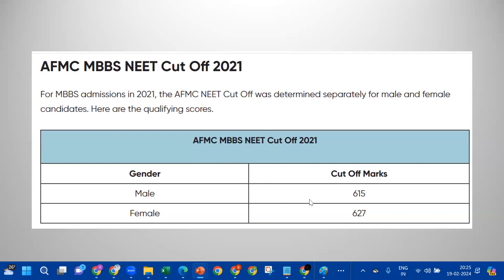For male students the cut-off is 6.15, and for female students the cut-off is 6.27. The male has a slightly lower cut-off and the female is slightly higher. For example, if 30 seats are available and 30 male students apply, the cut-off is 6.27. There are a number of 10 to 15 marks difference in these scores.